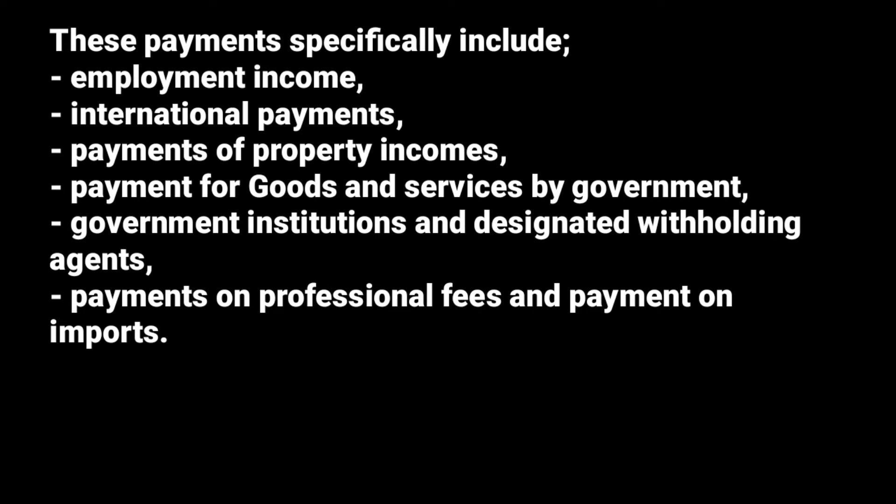These payments specifically include employment income — tax is held at the source by the employer. Then international payments, for example paying musicians or sports persons who come from other countries to Uganda to perform, and other workers. In case of payment of property income like dividends and royalties, there is also withholding tax at the source. Then payment for goods and services by the government — government institutions are designated withholding agents. And lastly, payments on professional fees and payments on imports. They all have withholding tax; all taxes are held at the source by the withholding agent.